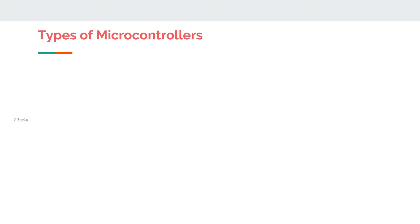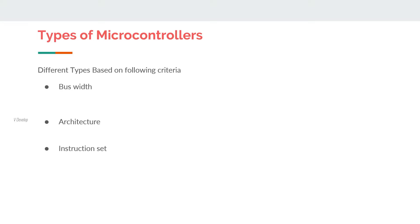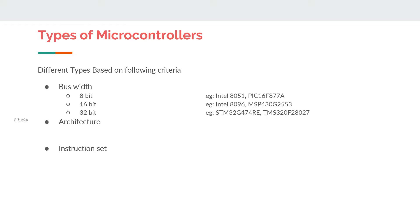How can microcontrollers be classified? Predominantly, we can classify according to these criteria. Based on the bus width, we have mainly three types of microcontrollers: 8-bit, 16-bit, and 32-bit. Don't worry about what bus width is — we will talk about this again in upcoming videos.